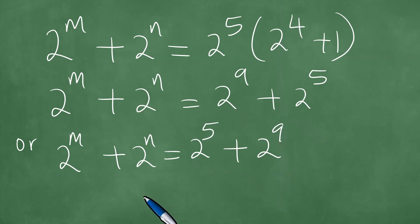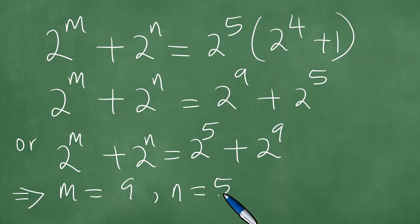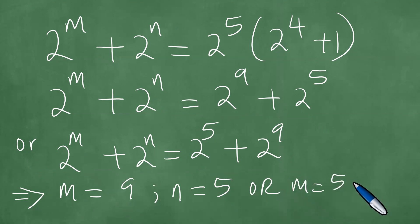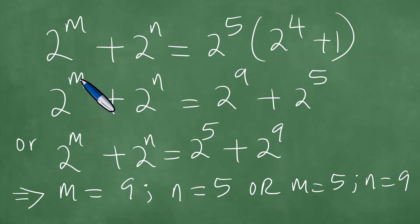By comparison, in the first case we can see that m is 9 and n is 5. In the second case, due to commutativity, m is 5 and n is 9. So in the first case, m equals 9 and n equals 5.